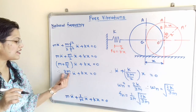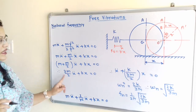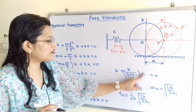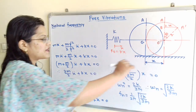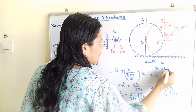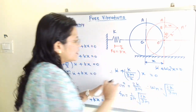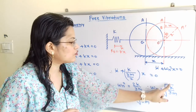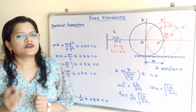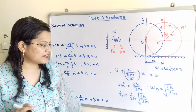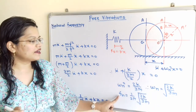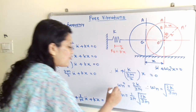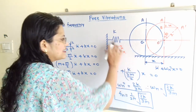Dividing both sides by the coefficient of ẍ, which is 3m/2, the equation becomes: ẍ + (2K/3m)·x = 0. Comparing with the standard form ẍ + ωn²·x = 0, we get ωn² = 2K/3m, so ωn = √(2K/3m). The natural frequency is Fn = ωn/(2π) = (1/2π)√(2K/3m).